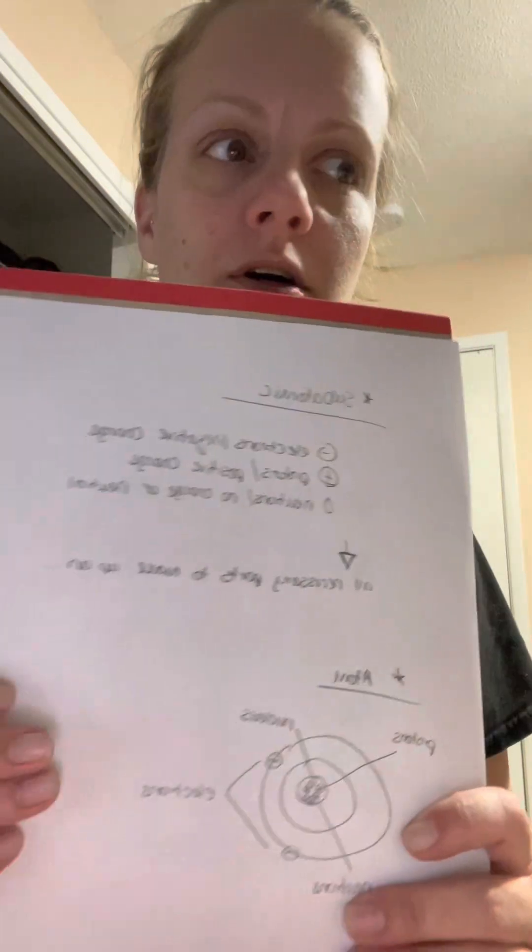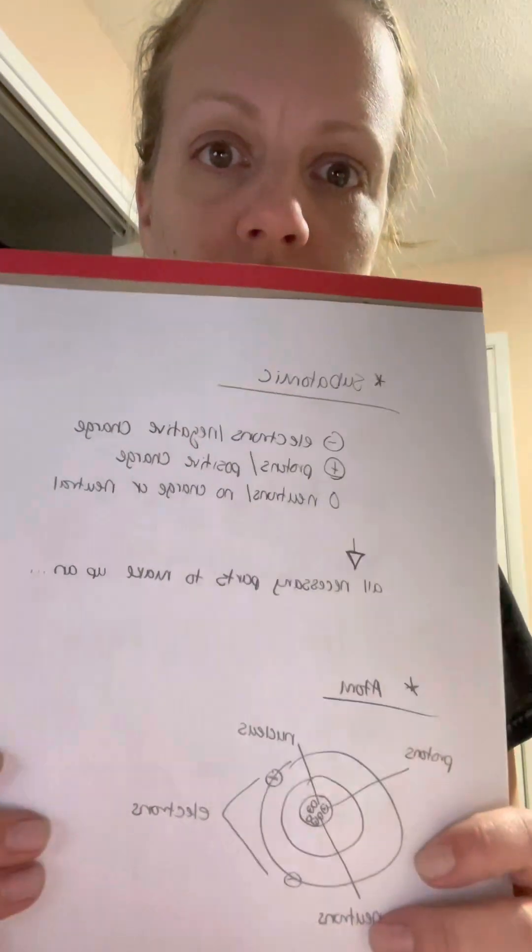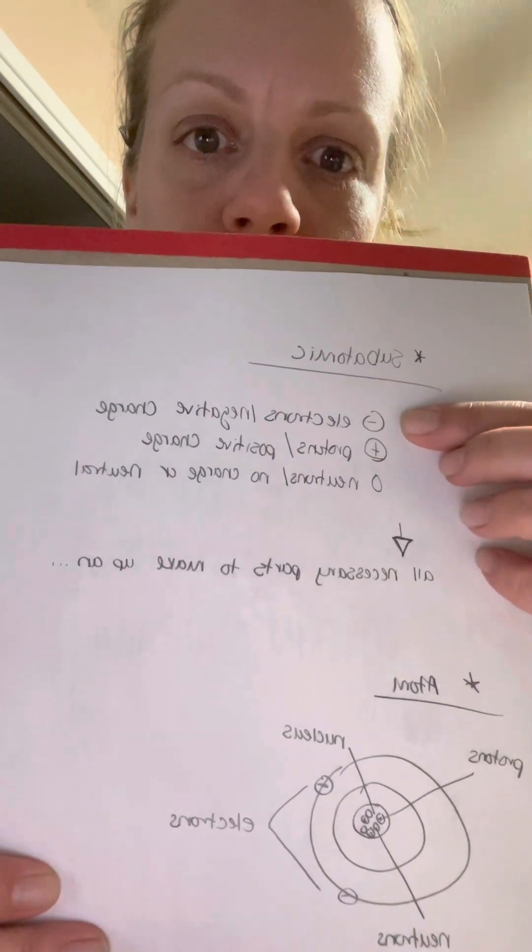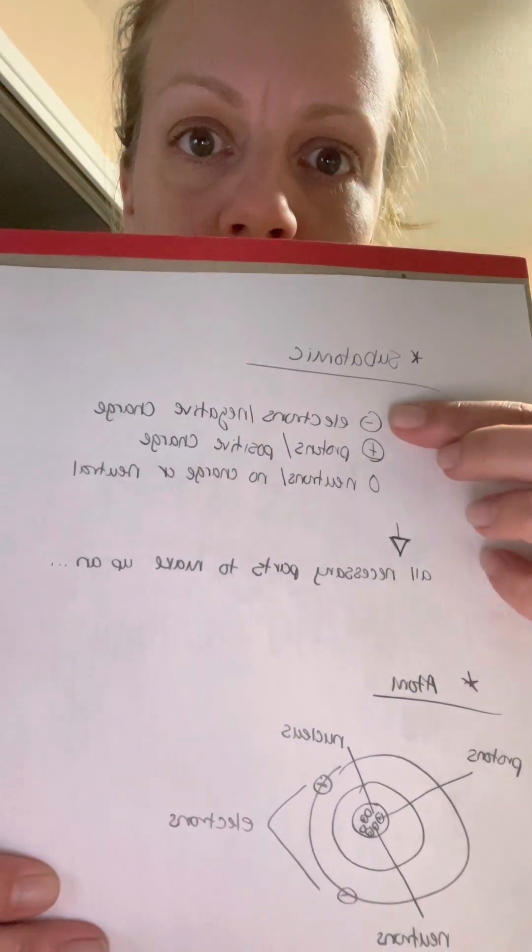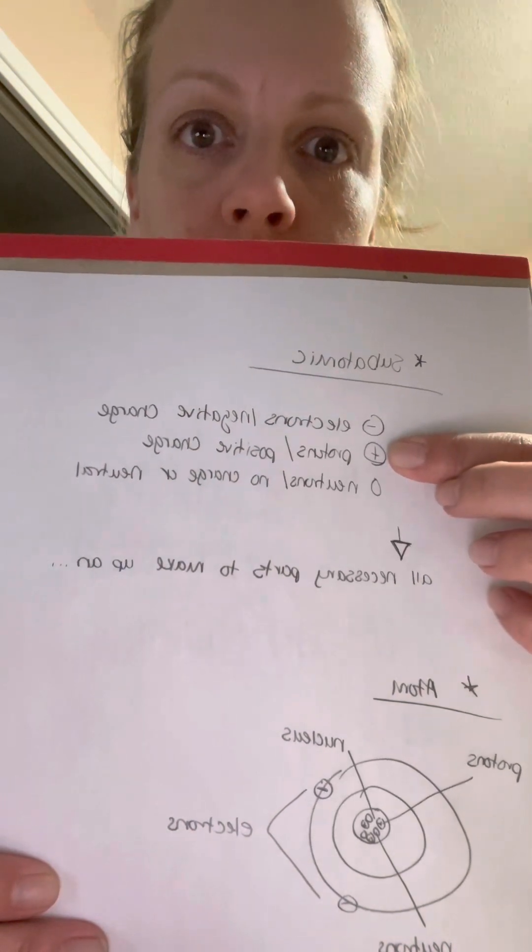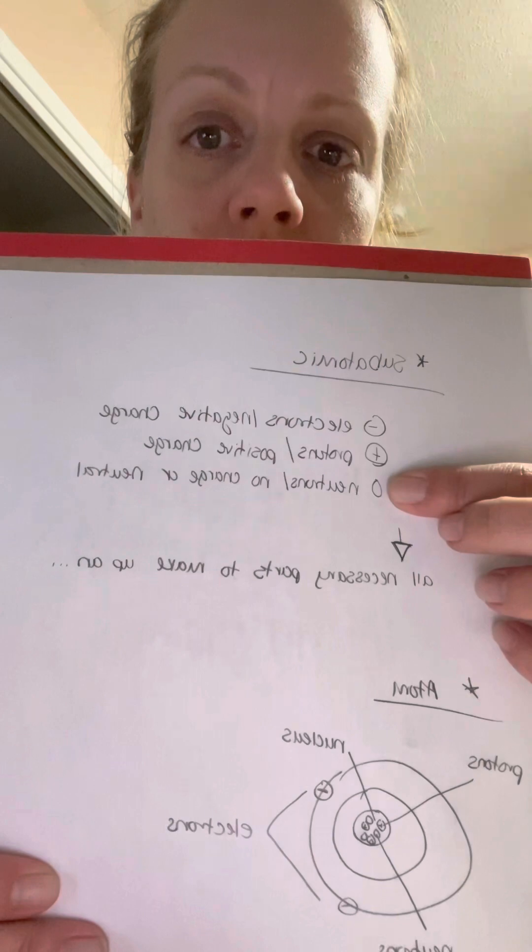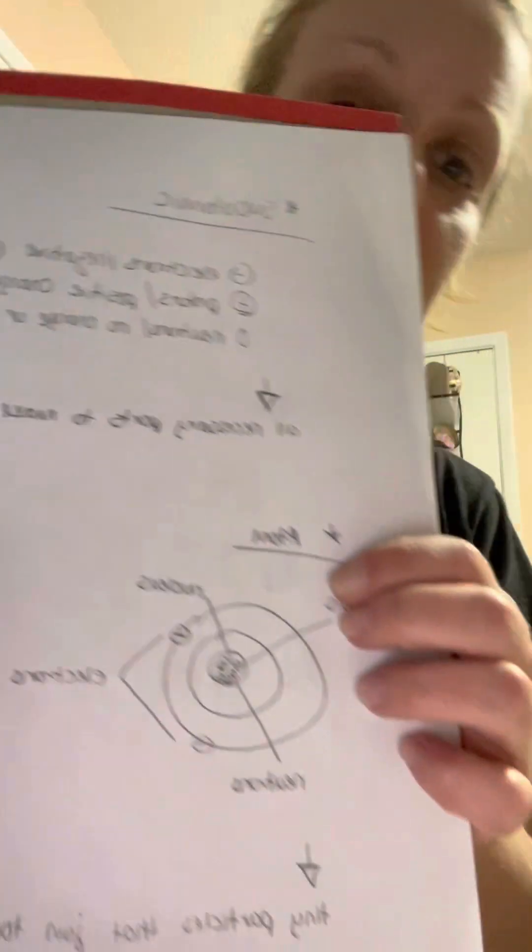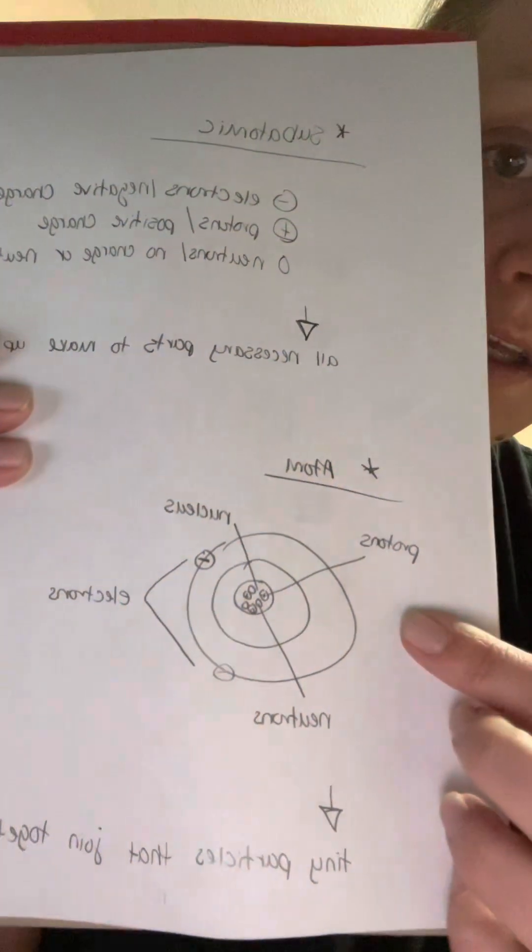Okay, to begin I will be talking about the levels of organization starting with subatomic. Subatomic is the parts of an atom: electrons which have a negative charge, protons which have a positive charge, and neutrons which have no charge or are neutral. All of these are necessary parts to make up the atom.